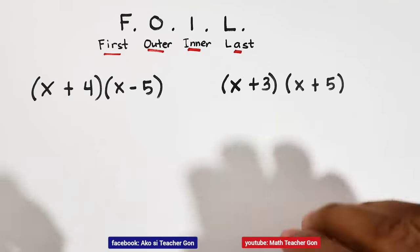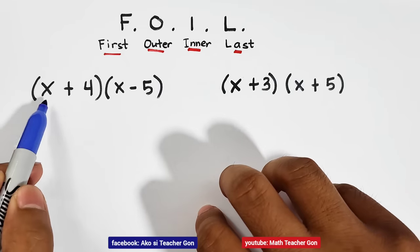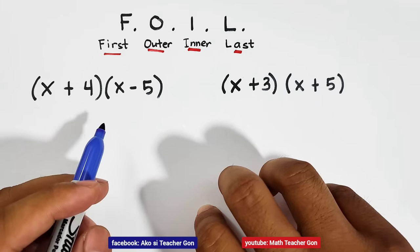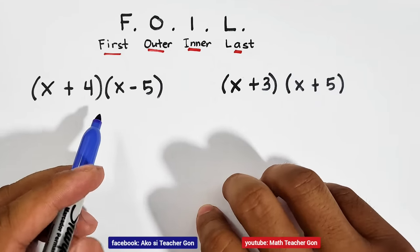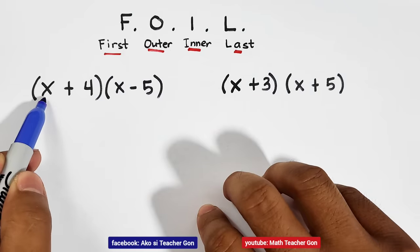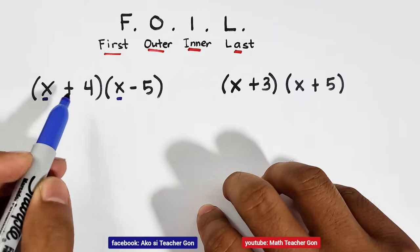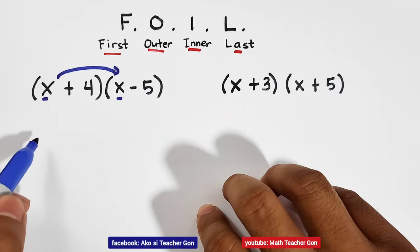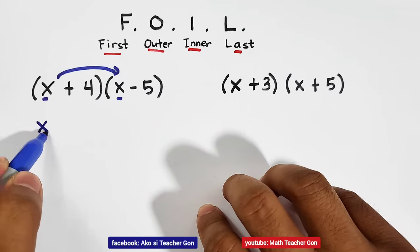Now let us multiply these two binomials. So as you can see, we have 1 and 2 terms. We're trying to find the product of the two binomials. Following the FOIL method, the first terms, your first terms are x and x. So you will multiply them. What is x times x? That would give you x squared.